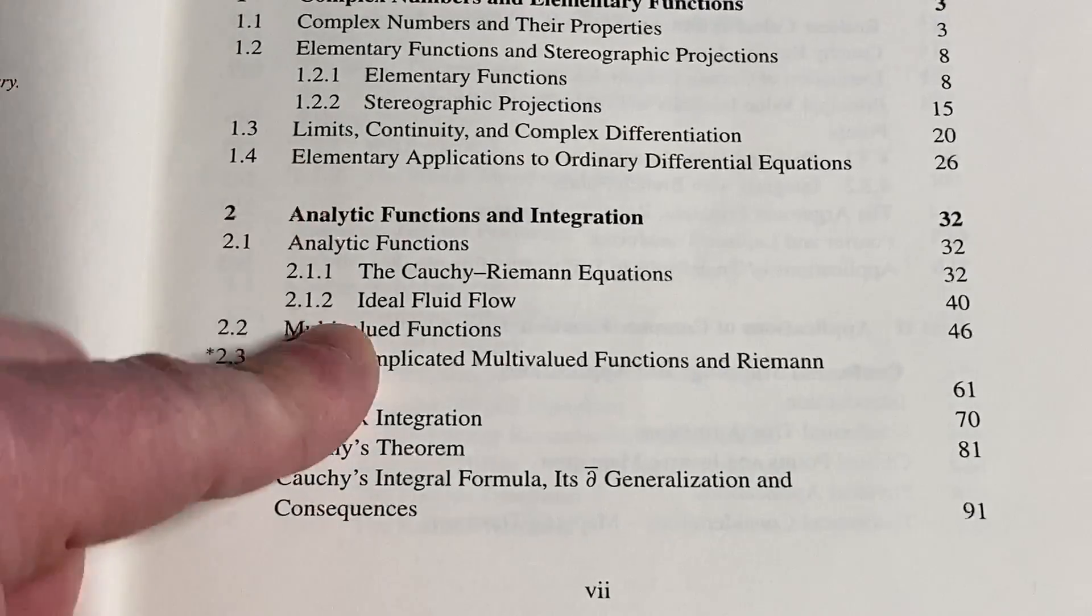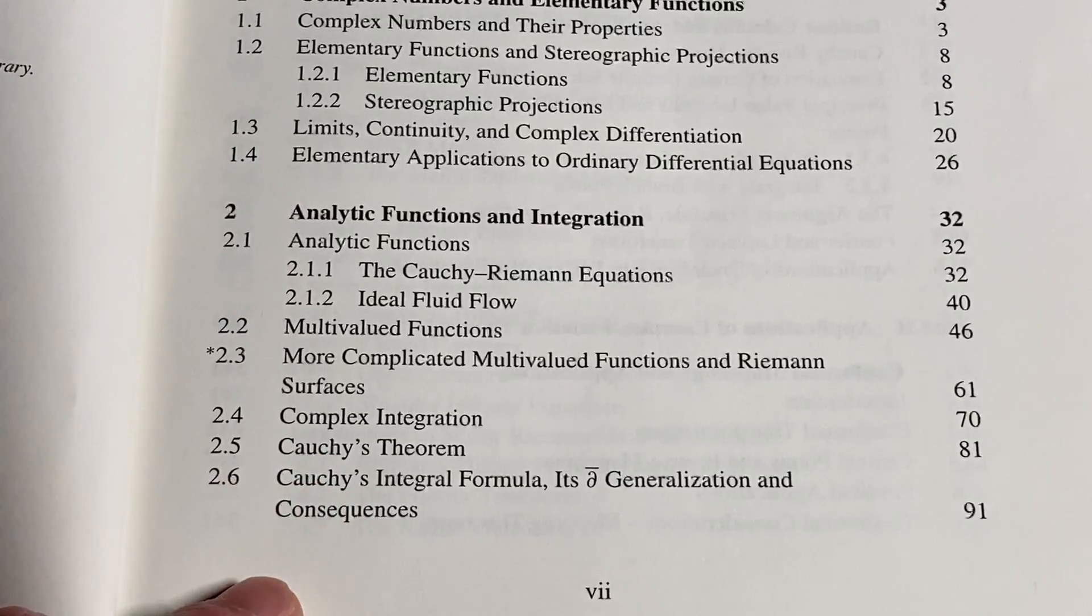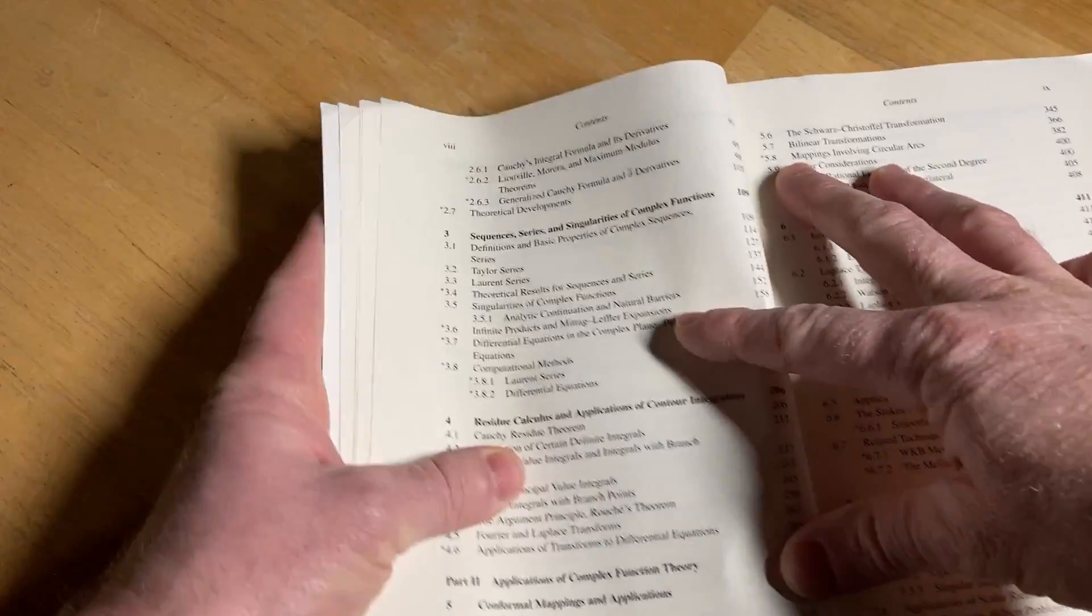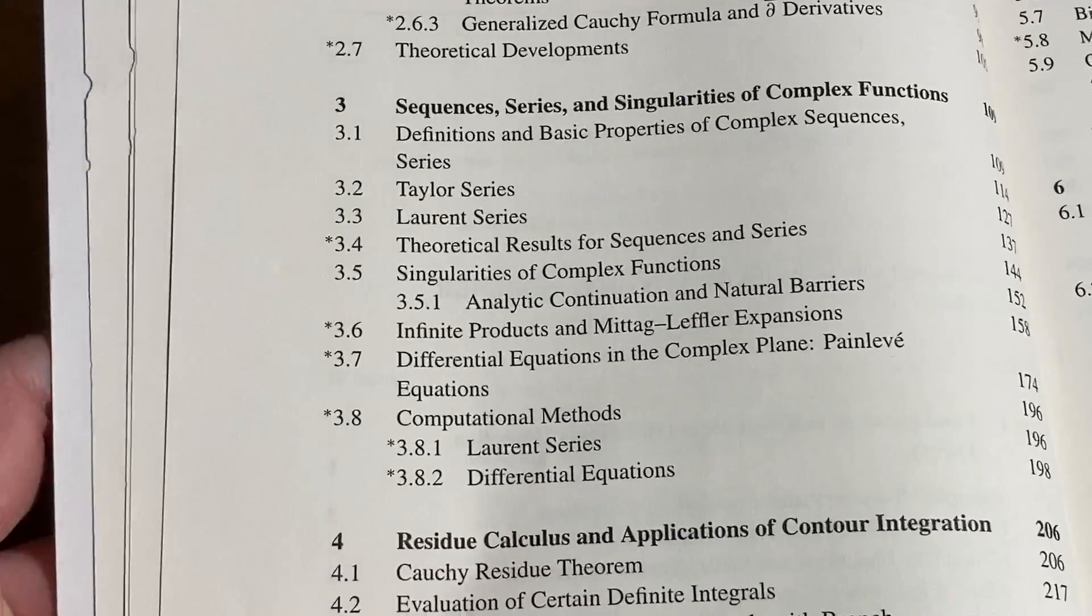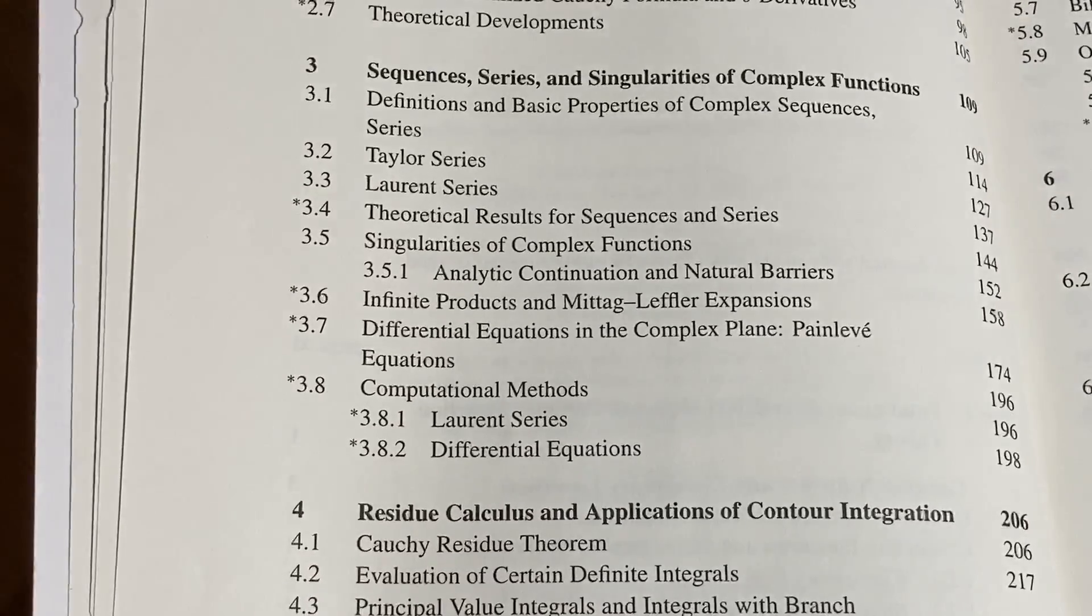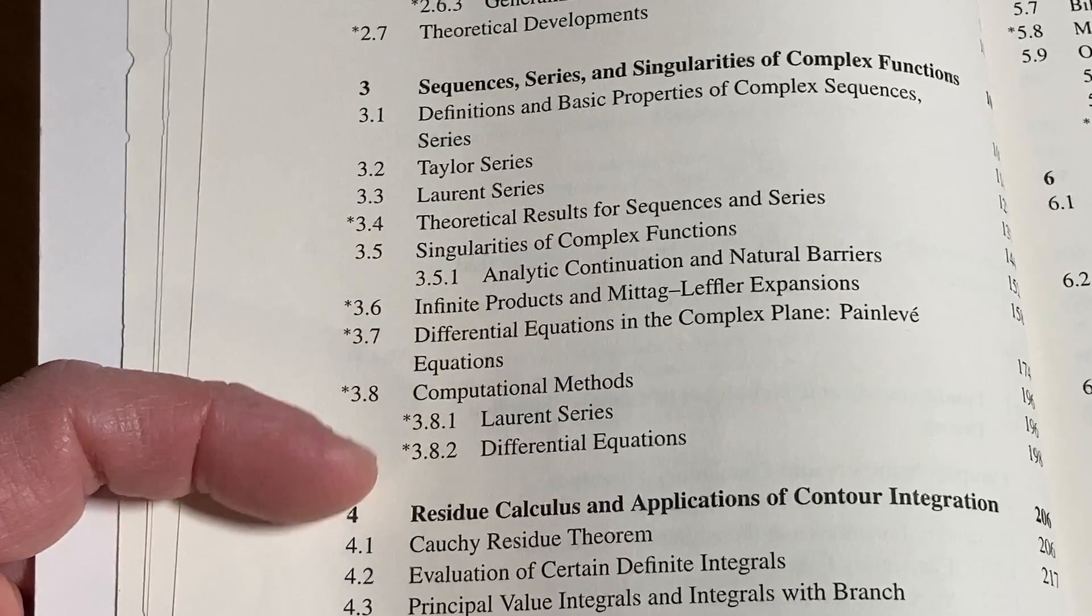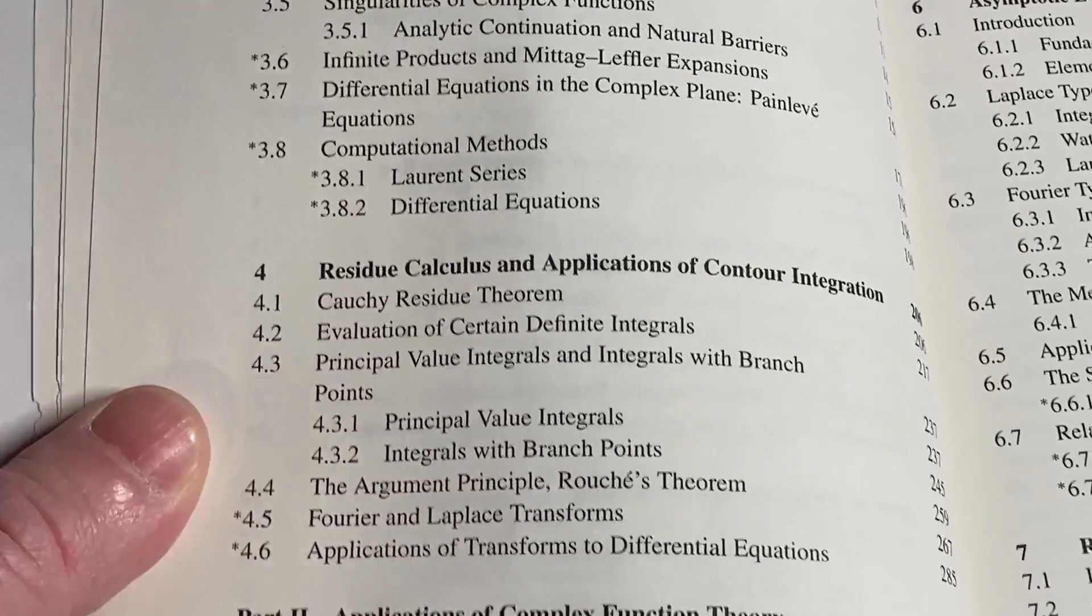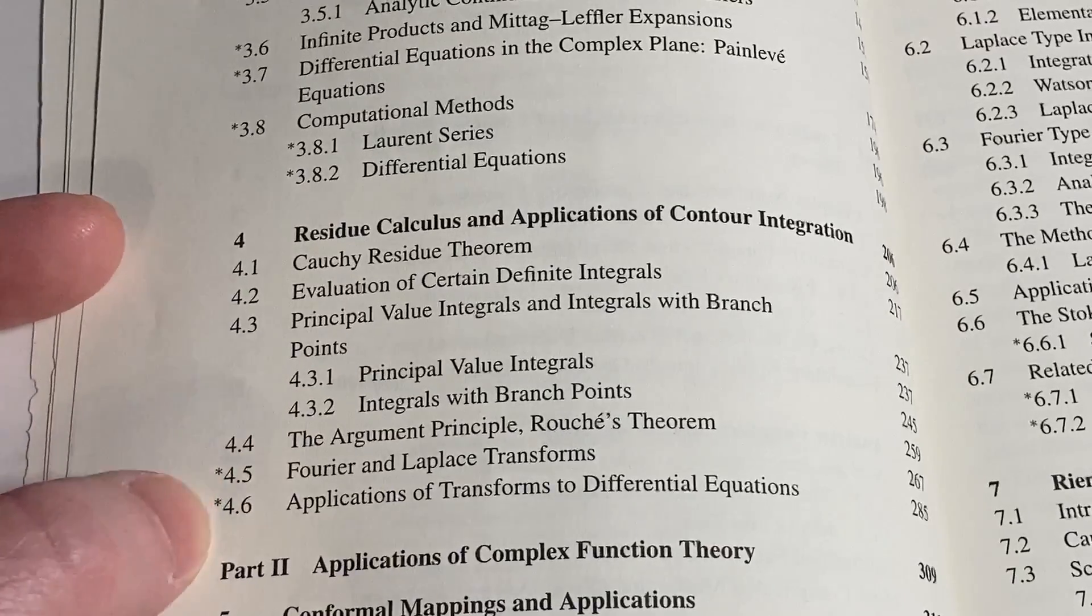At least you can start working through it. The proofs often hang people up, but there's a lot of computational stuff. Cauchy-Riemann equations. This is all stuff you learn in a complex variables undergrad course. Cauchy's theorem. Then we have sequences, series, and singularities of complex functions. Again, this is all undergraduate stuff. There's some theoretical stuff. Notice the starred sections. Infinite products, differential equations in the complex plane. Then residue calculus. Again, things that you learn in an undergrad course.